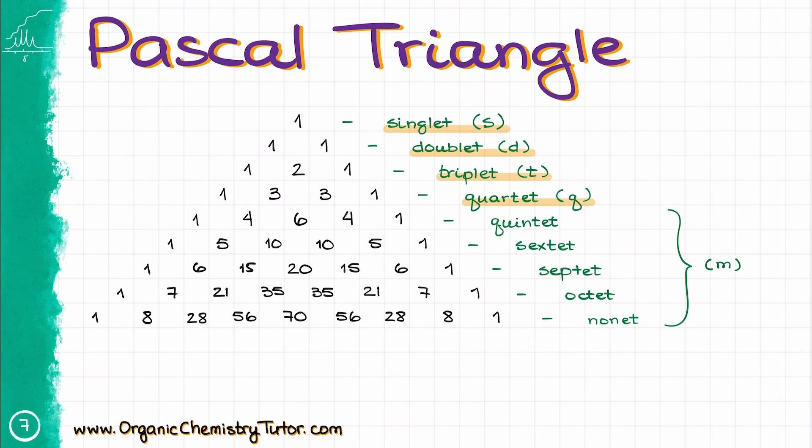I also want to point out that since the intensity of the inner peaks grow exponentially, sometimes we won't be able to count all the peaks for the multiplets. So, in the actual spectrum that you may see on your test, a nonnet, for example,